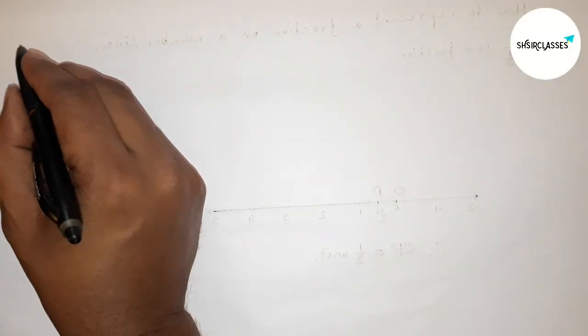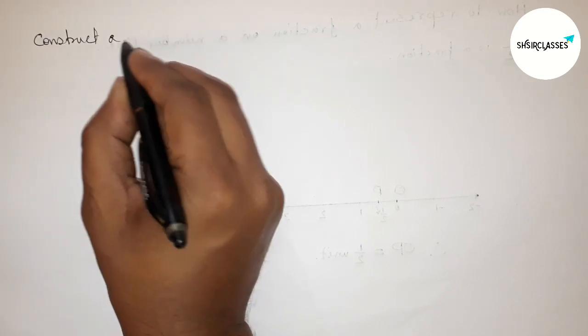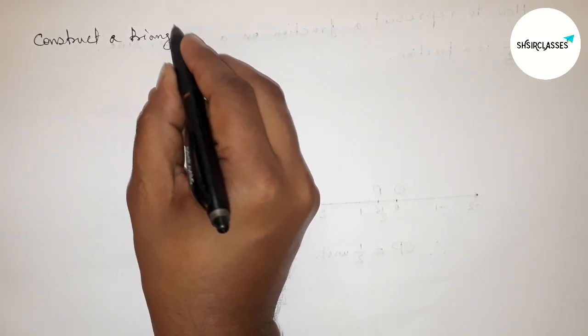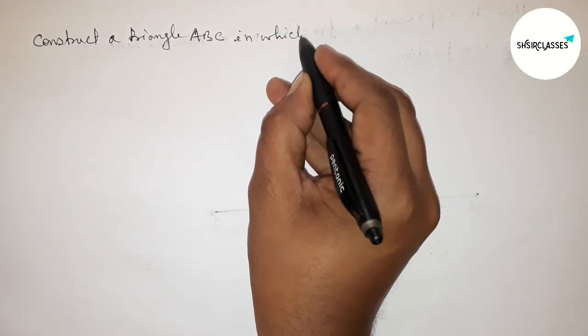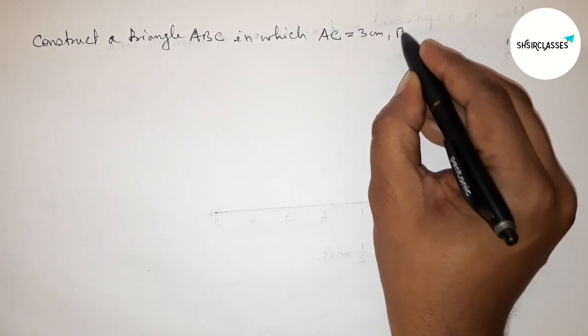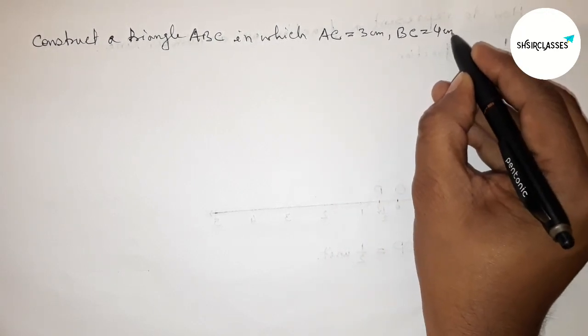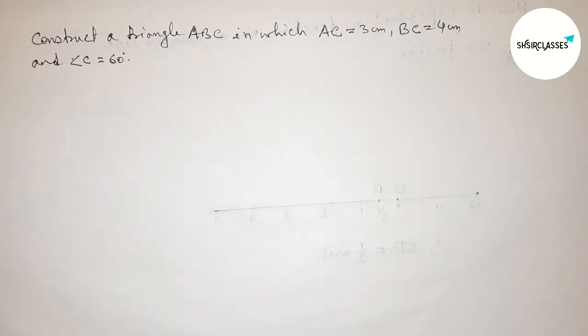Hi everyone, welcome to SI Share Classes. Today in this video we have to construct a triangle ABC in which AC equals 3 centimeters, BC equals 4 centimeters, and angle C equals 60 degrees.